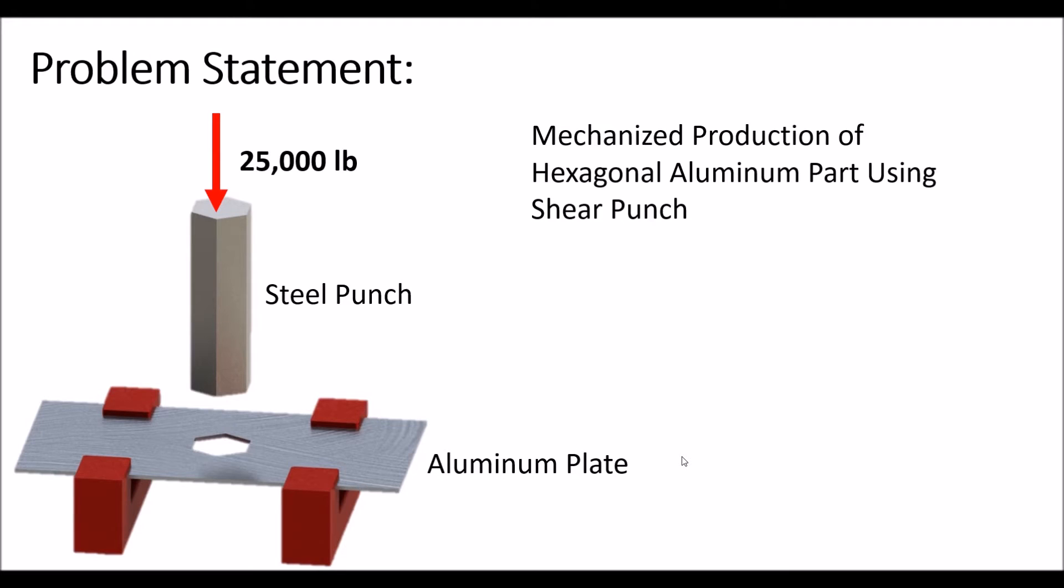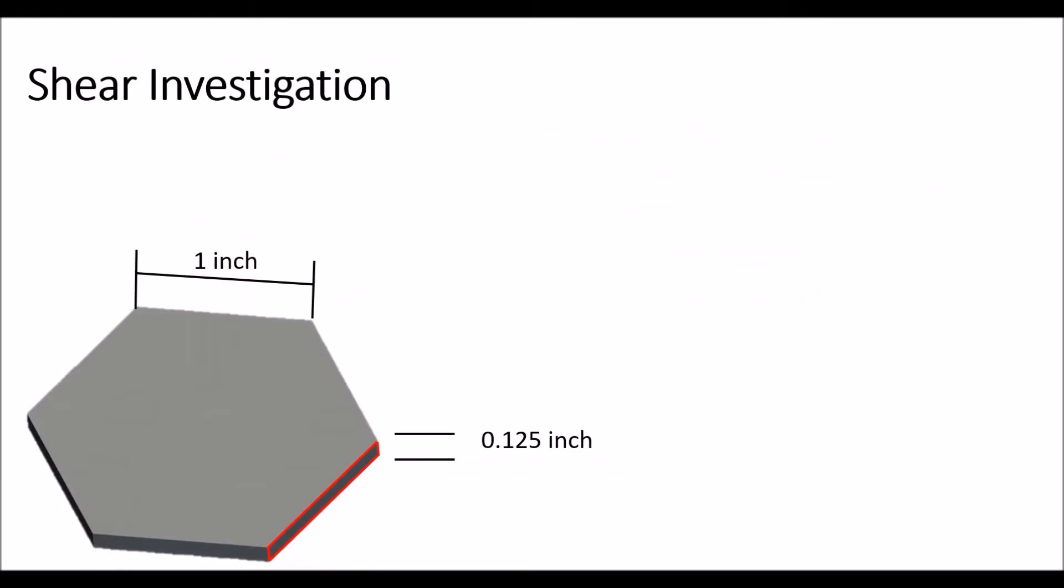The first question we need to ask ourselves is will it fail due to shear? So will it actually punch out the piece the way we want it to? Then we need to ask will it fail due to bearing before it does that? So to start we're going to look into the shear part of this problem.